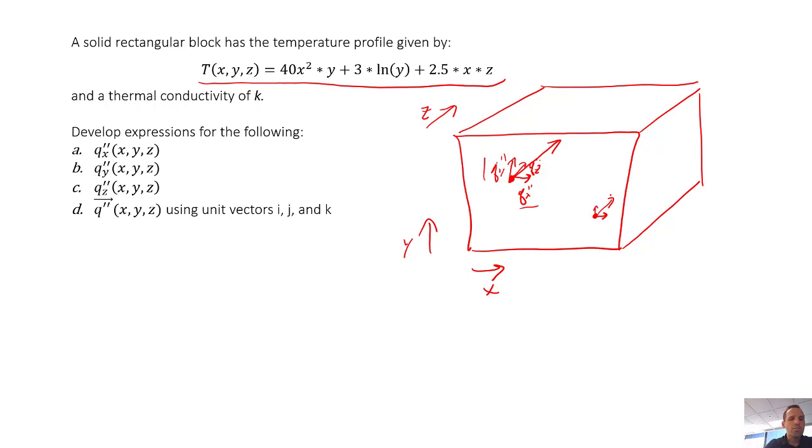So what we're going to do here to get this is we're going to apply Fourier's law, which states that flux, the flux vector, is equal to minus k times the gradient of our temperature.